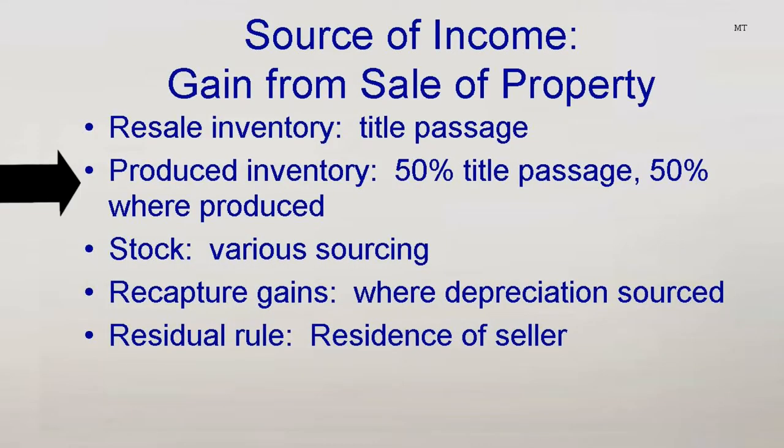If the taxpayer or an affiliate manufactured or produced the property, the income is 50% from where it was produced and 50% from where it was sold. Mort asks: 'What do you mean where it was sold? You mean where they signed the contract? That's how most countries do it.' No, Mort, that would allow taxpayers to manipulate the source a bit too much. Place of sale means where title passes, and this can vary based on what the sales terms say.